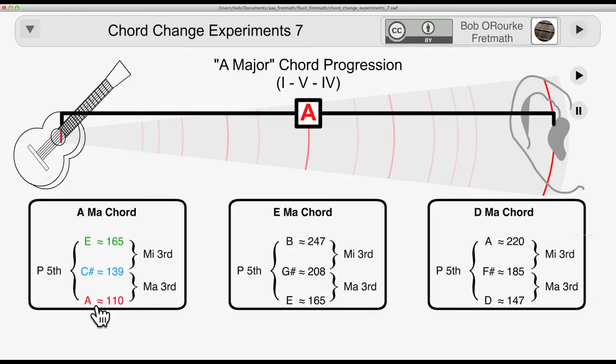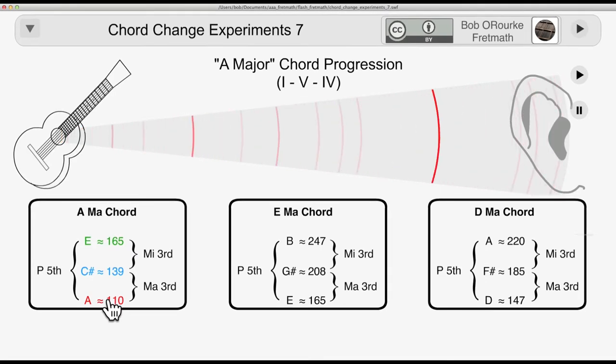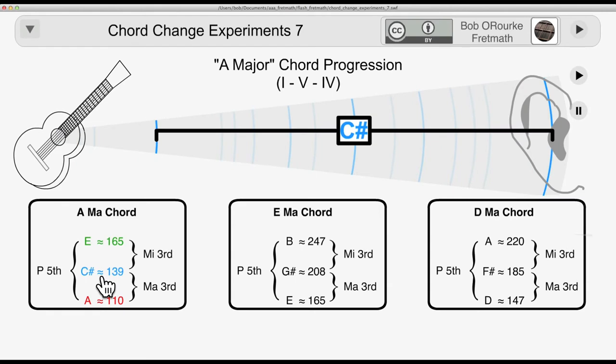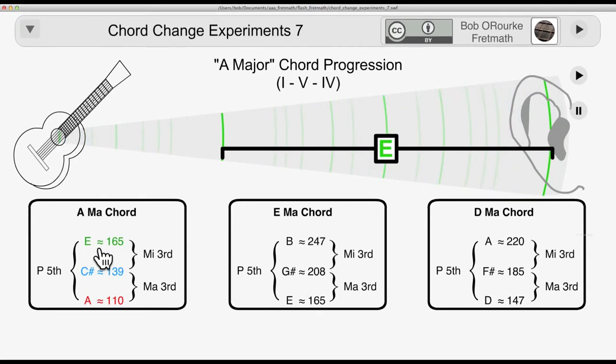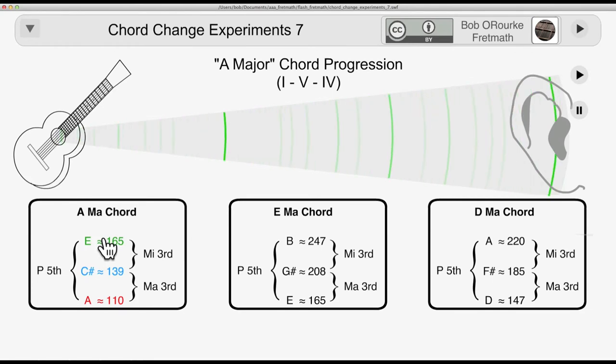Here's the root of the A chord. A equals 110. It is in motion. C sharp. This would give you the major third above A. Here's the E note. It's a perfect fifth above the root and a minor third above the C sharp.